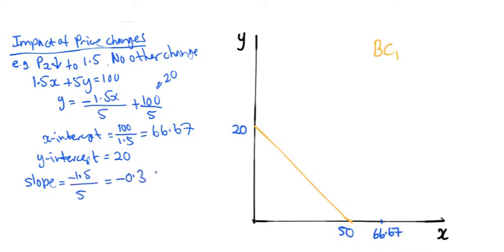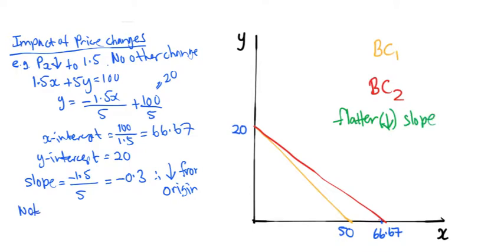Compared to the original, this budget constraint pivots outwards along the x-axis. That should make sense because the reduction in price means that we can now purchase a maximum of 66.67 units of good X. Whereas before, the most we could purchase with our $100 was 50 units of good X.